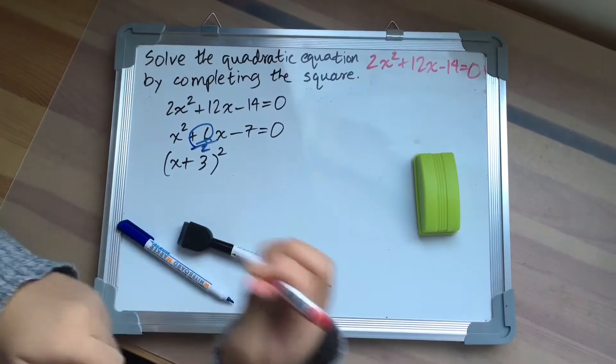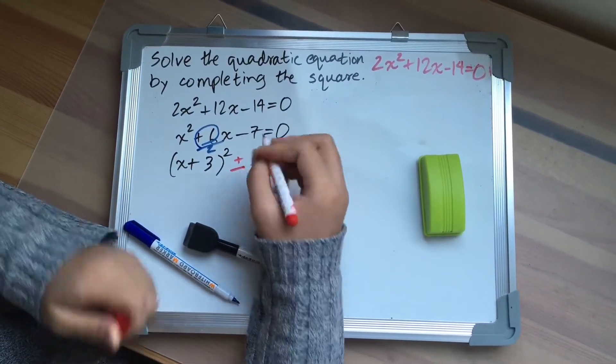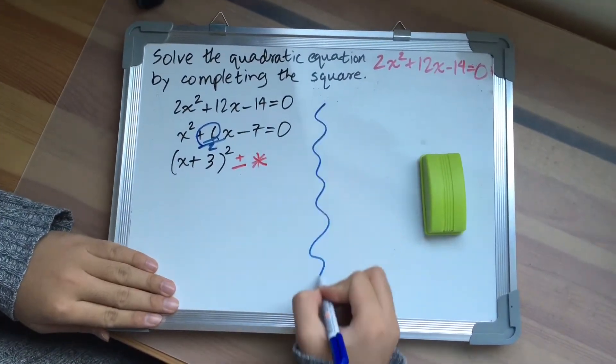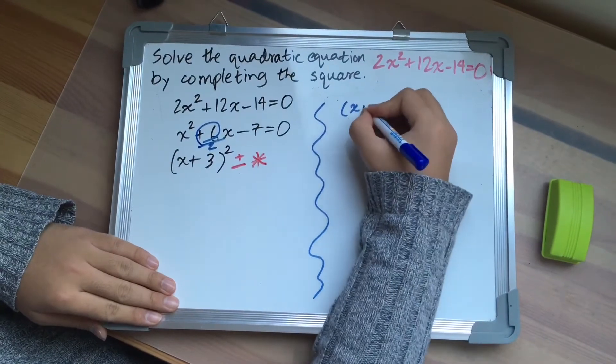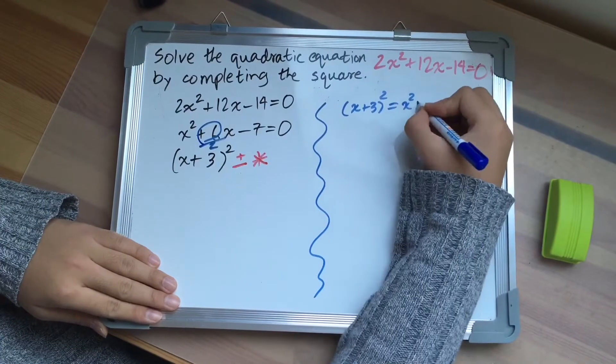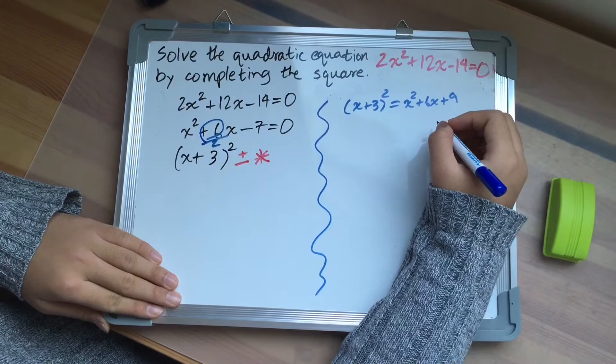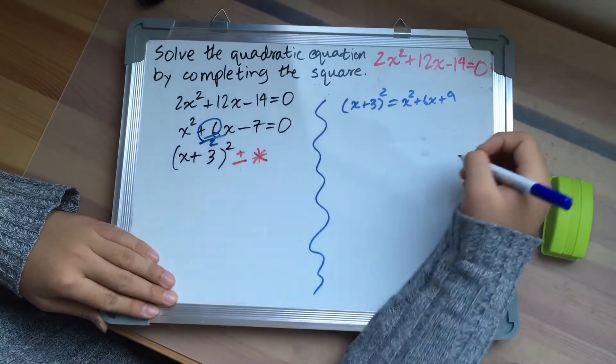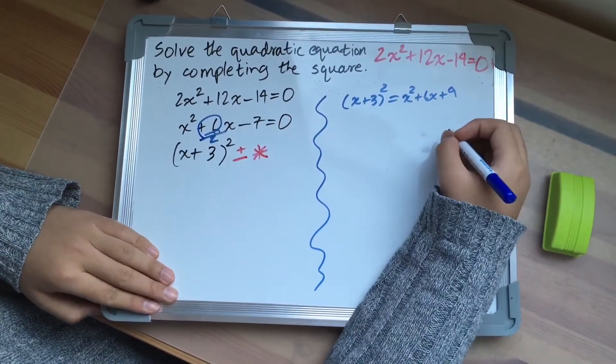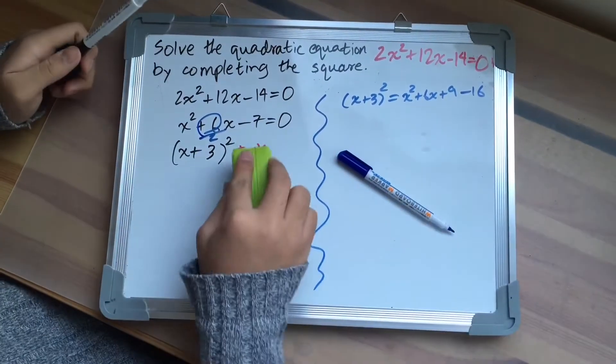And to complete the square, add or minus a number at the end. And in order to get the number, you have to expand the squared bracket which is x plus 3 the whole square. And you'll get x squared plus 6x plus 9. Now compare this to the given equation. In order to get minus 7 from 9, you have to subtract 16. Therefore the number here will be 16.